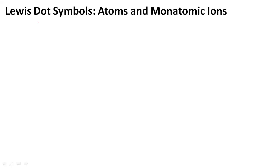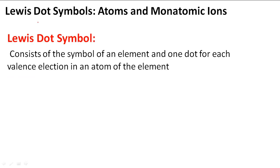Lewis dot symbols, atoms, and monatomic ions. A Lewis dot symbol consists of the symbol of an element and one dot for each valence electron in an atom of that element.